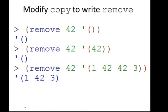Next we're going to write remove. The goal of remove is to remove some element from a list, and actually we're only going to remove one copy of it. So in this last example, where I have two copies of 42, I'm only going to remove the first copy, and the second copy will stay there.